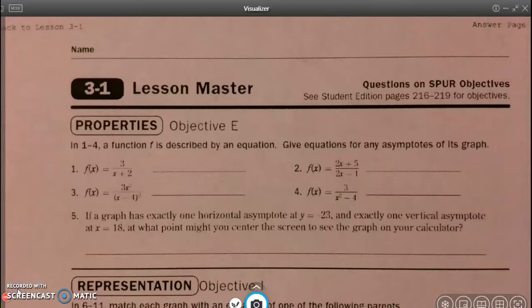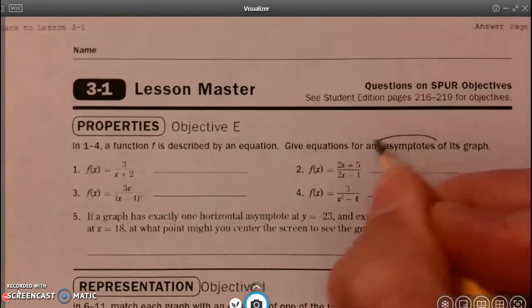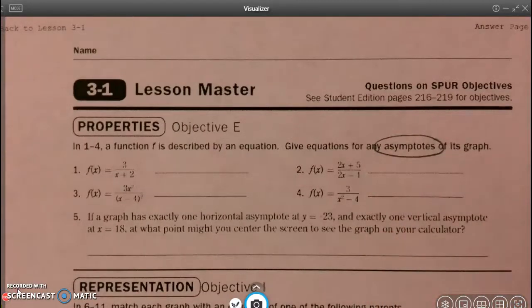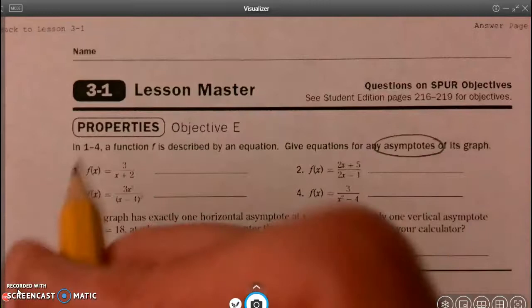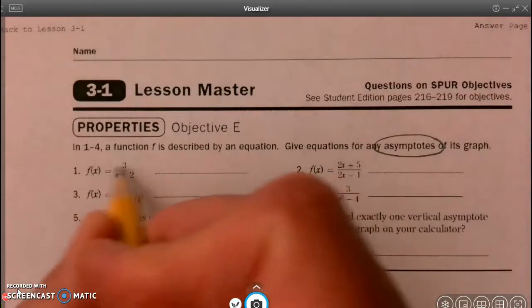All right, so now let's look at lesson master 3.1. And 1 through 4, a function f is described by an equation. Give equations for any asymptotes of the graph. Notice that our asymptotes come from places where our denominator is undefined, where our denominator can't be zero. So we can determine if there's an asymptote based on the fact that if there's a denominator that has a variable in it. So let's look at this first denominator, x plus 2.